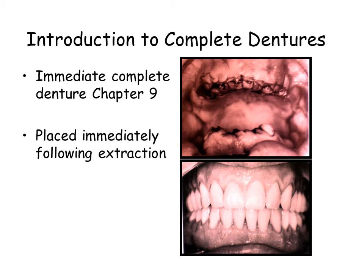An immediate denture is a complete denture or removable partial denture fabricated for placement immediately after the removal of natural teeth. A primary advantage of an immediate denture is the maintenance of the denture wearer's appearance. A disadvantage is that no tooth try-in prior to extraction can be performed to determine what the denture will look like.